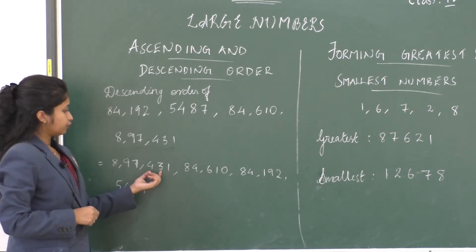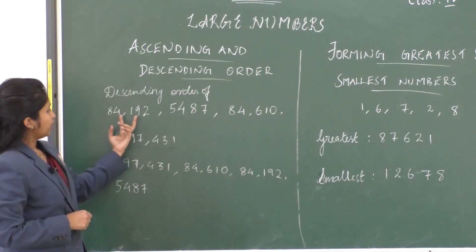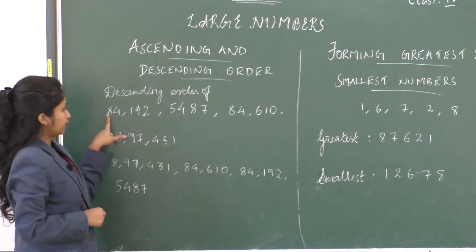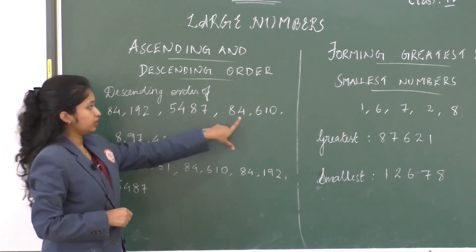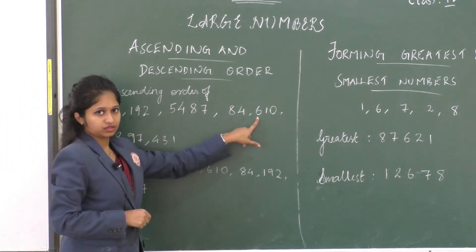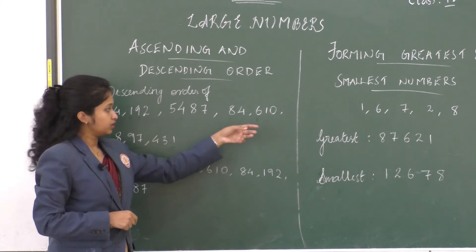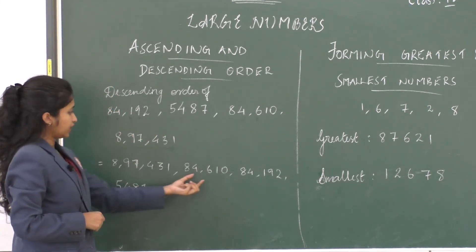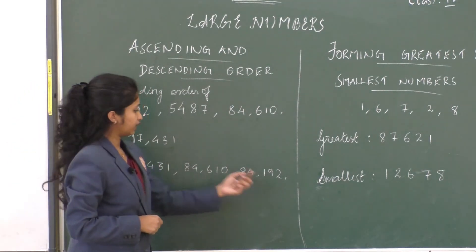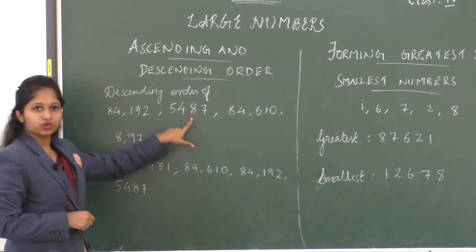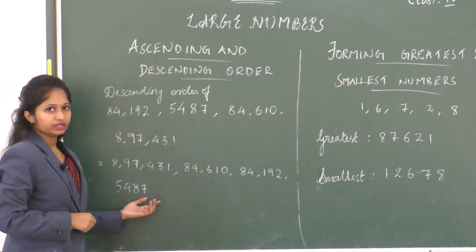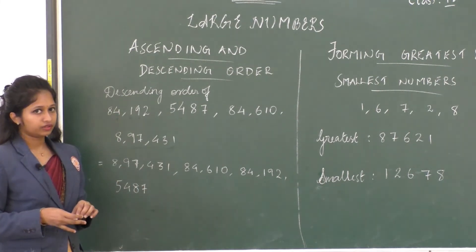Now comparing the two five digit numbers 84,192 and 84,610: the first digit is 8 for both, the second digit is 4 for both, so we look at the third digit — here 1 and here 6. Since 6 is greater than 1, 84,610 comes before 84,192. The four digit number 5,487 is the least of all. So the descending order is: 8,97,431 → 84,610 → 84,192 → 5,487. The ascending order is the reverse of this.